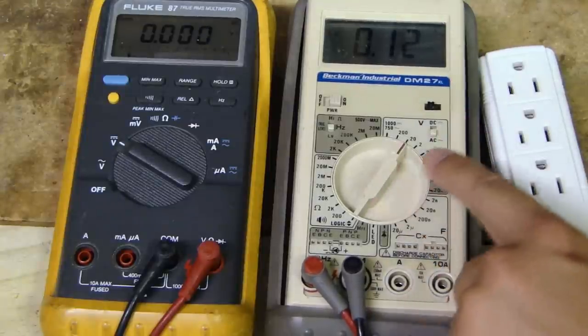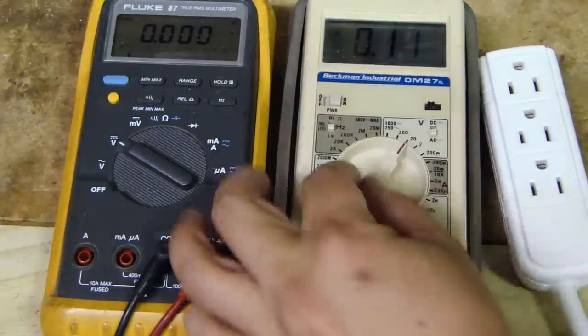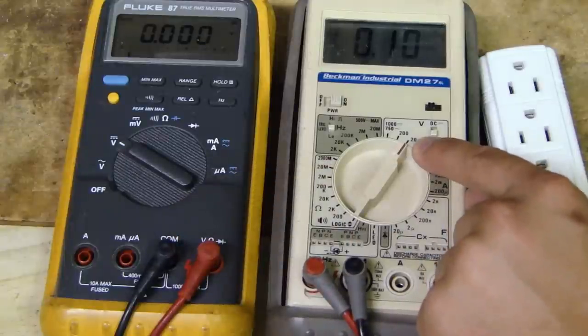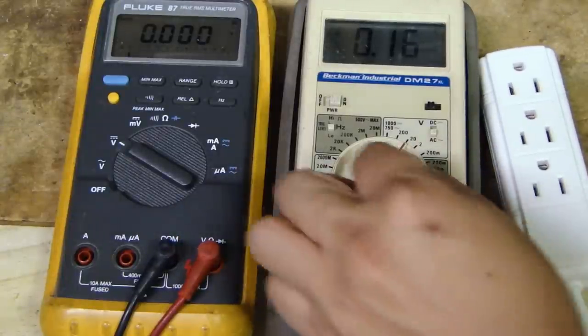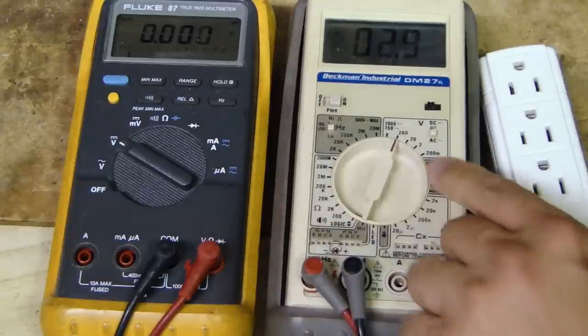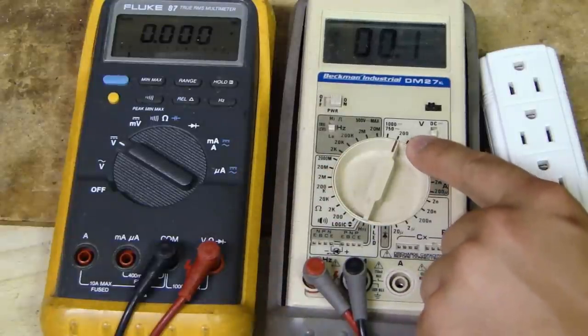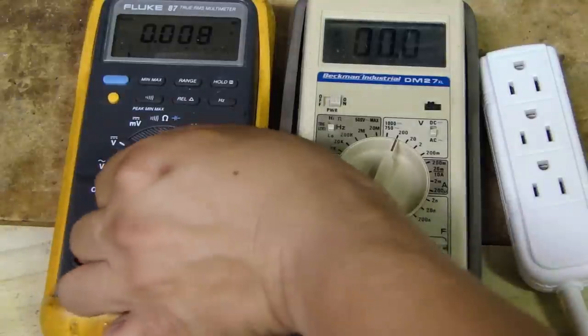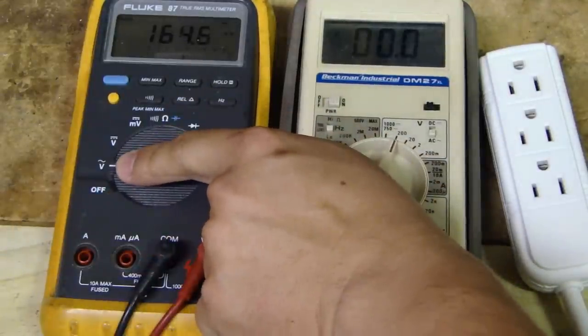Now, this one is not auto-ranging, so I have to tell it what scale needs to be, and right now it's on 20. Well, 20 is too low for the 120 volt, so I need to set this to 200 volt, so it's good up to 200 volt. And then on this one here, I'll set this to, over here, to the AC voltage.